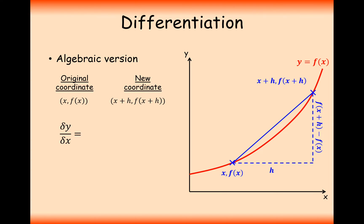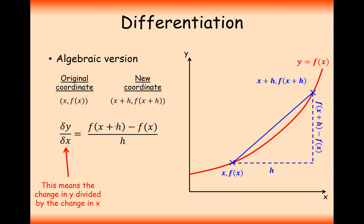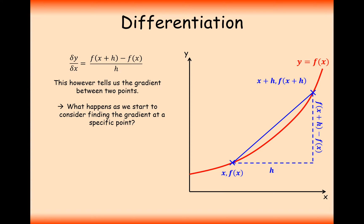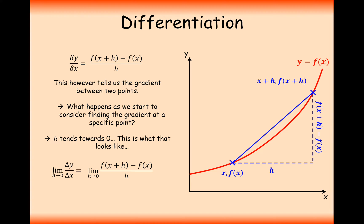So effectively the difference in y over the difference in x — which means a change in y divided by a change in x — is equal to f of x plus h minus f of x divided by h. As h starts to tend towards zero, we introduce what we call a limit, which is going to help us approximate this gradient more and more accurately because h is now going to start tending towards zero.